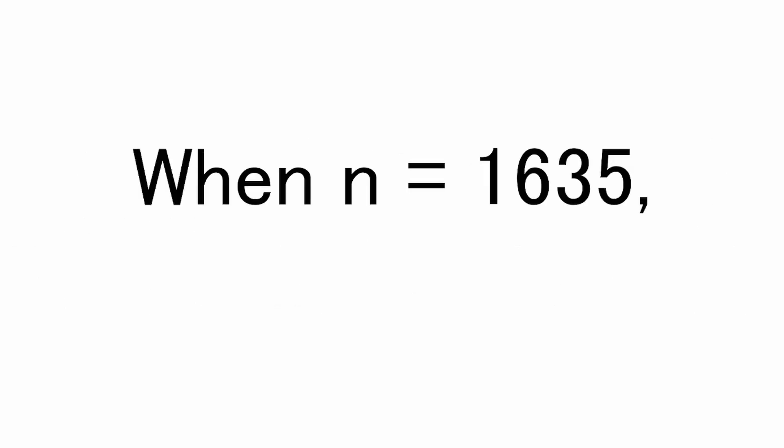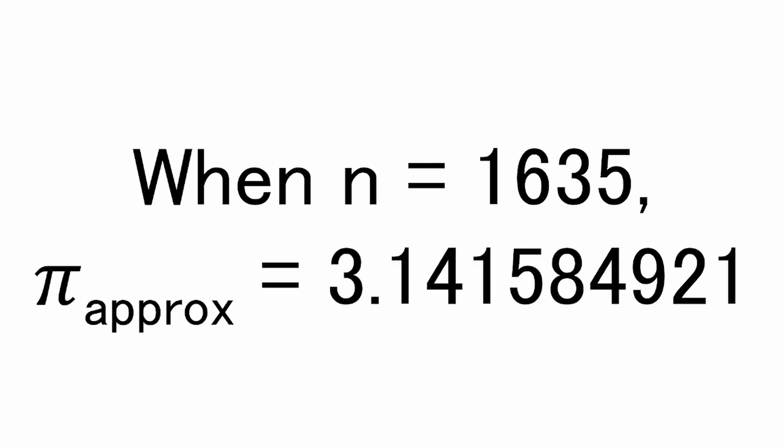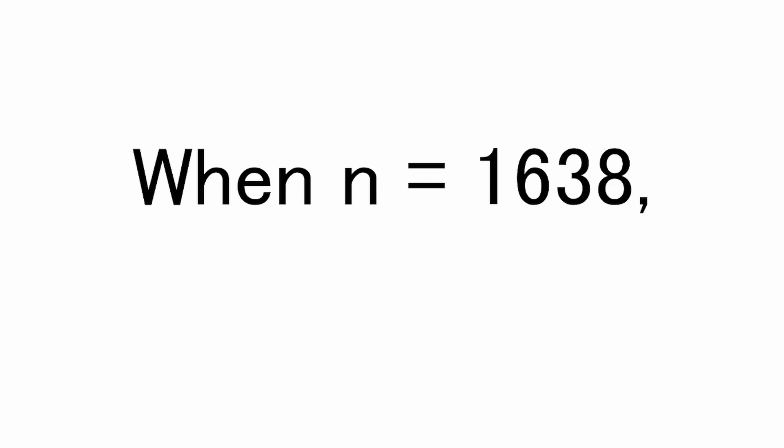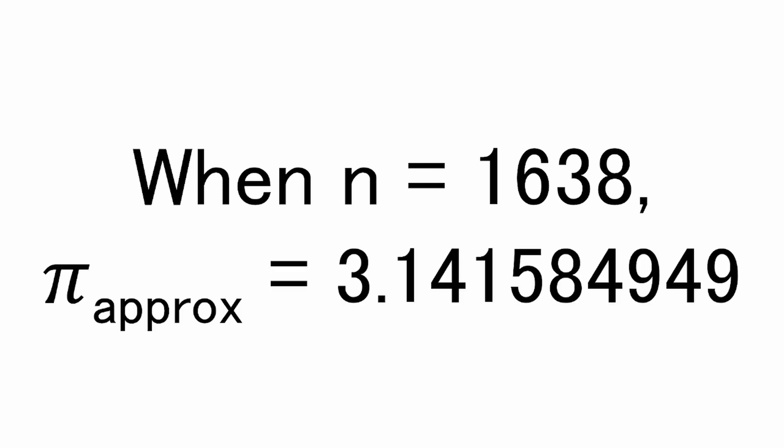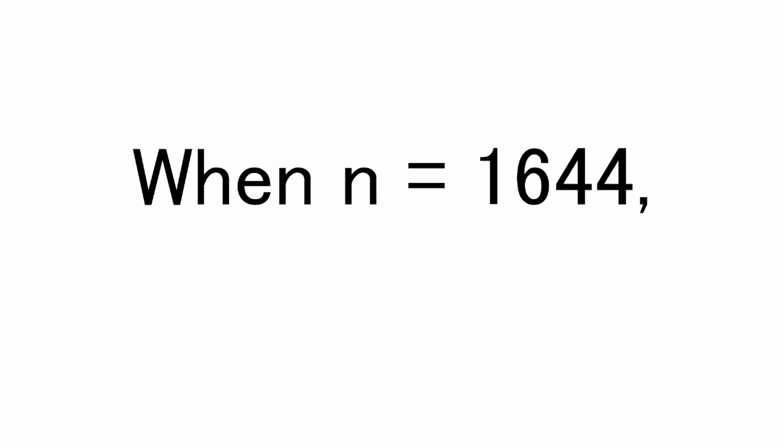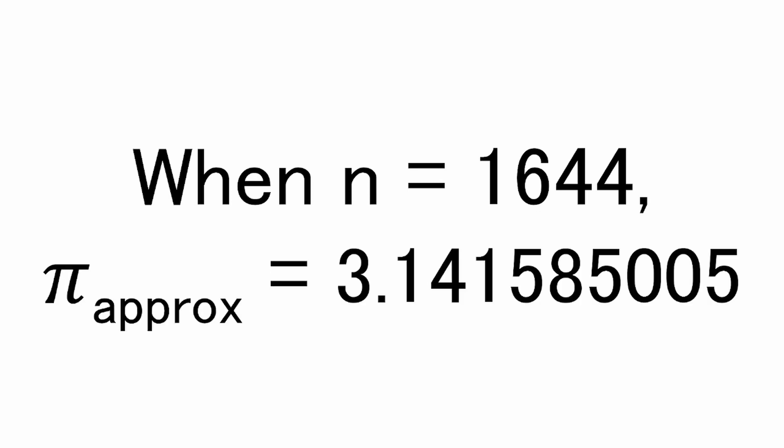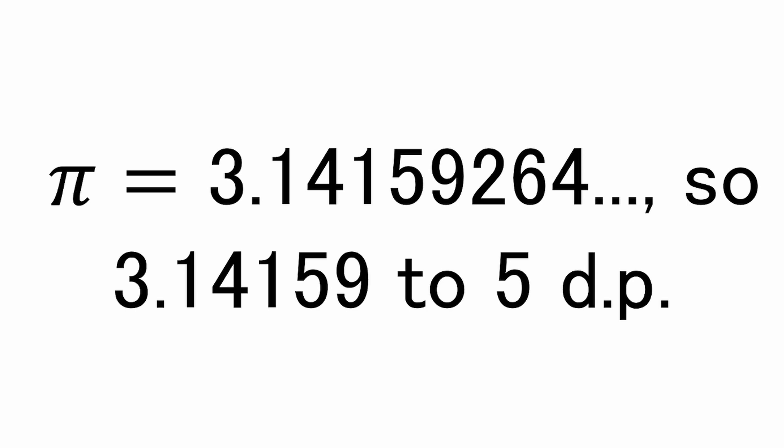When n equals 1635, our pi approximation is equal to 3.1415 8494949. Nearly there again. When n is equal to 1644, our pi approximation is equal to 3.141584949, which is 3.14159 to 5 decimal places, which agrees with the first 5 decimal places of pi.